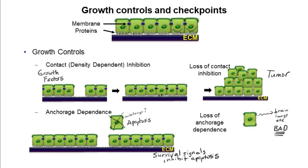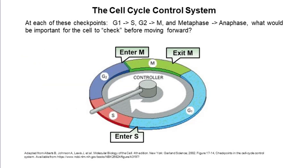Contact inhibition and anchorage dependence are both important general growth controls in multicellular organisms. Next, I want to talk about control at the molecular level. Here's a representation of the eukaryotic cell cycle: interphase, comprised of G1 where the cell carries out normal metabolism, S phase when DNA is synthesized, and G2 where DNA repair is finished and organelles are duplicated. Interphase is followed by the mitotic phase, comprised of mitosis and cytokinesis. We know these phases happen in sequence, but how does the cell know to move to the next stage — for example, from G2 to mitosis?